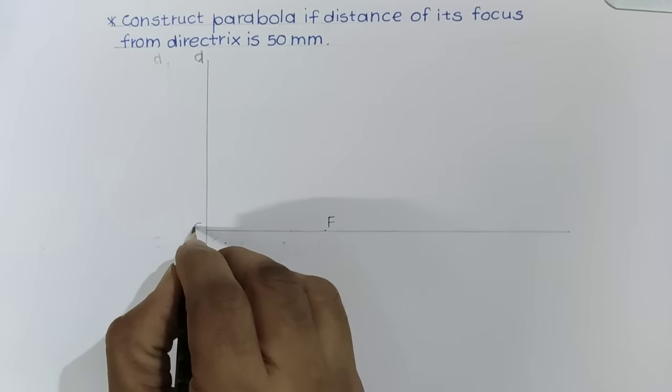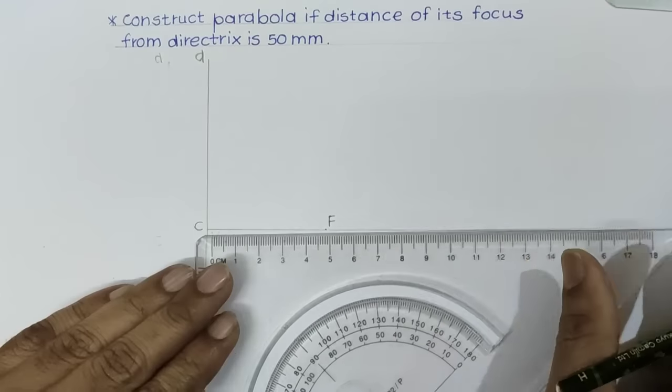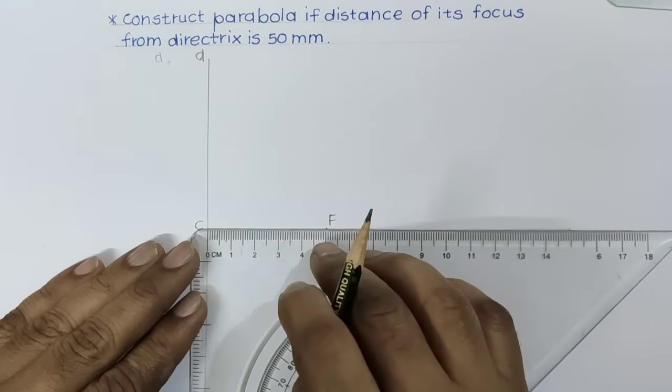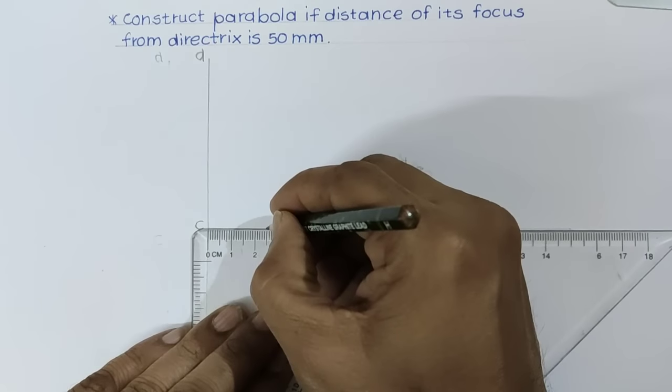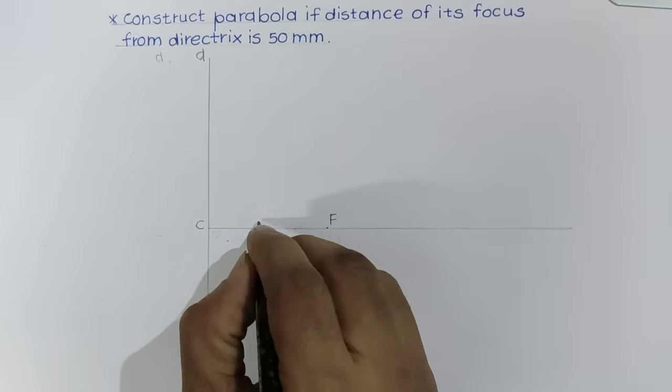Name this point as C. Now try to locate vertex for parabola. Vertex will be exactly at the midpoint of line segment CF. This is the location of vertex.